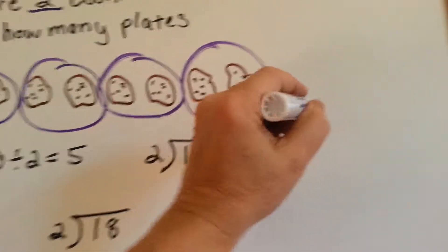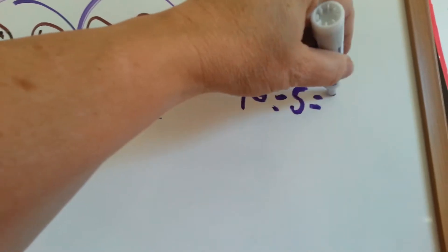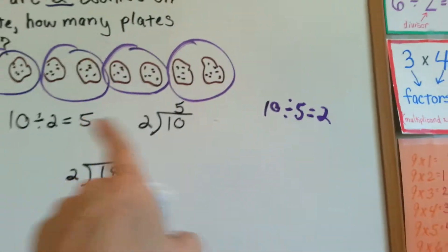You could also say that 10 divided by 5 equals 2, because it's a fact family. See that?